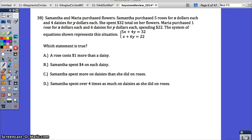Okay, so let's take a look at 38 in your algebra 1 packet. Samantha and Maria purchased flowers. Samantha purchased 5 roses for X dollars each and 4 daisies for Y dollars each. So remember that. Look at your equations. The X stands for the dollars for each rose and the Y stands for the dollars for each daisy. She spent $32 total on her flowers. Maria purchased 1 rose for X dollars and 6 daisies for Y dollars each spending $22. The system here is given. Which statement is true?